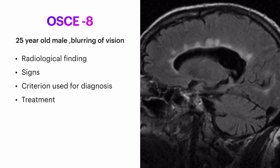Question eight: a young male came with complaint of blurring of vision. An MRA scan was done which is suggestive of the image shown. Write down the radiological findings seen in this image, other findings which can be seen on MRI, the signs and criteria used for diagnosis, and the treatment options available.